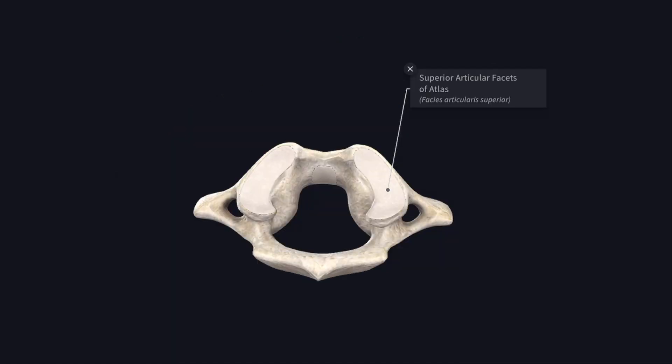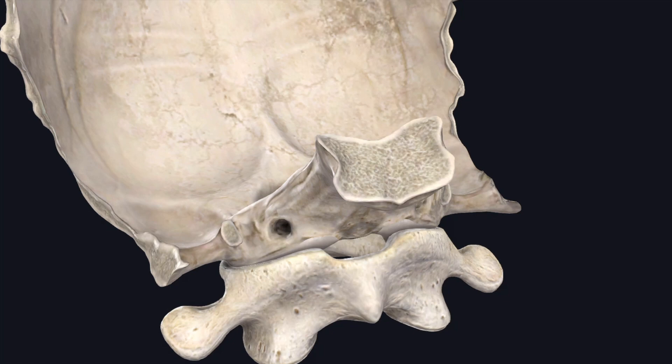The superior articular facet of the atlas is concave, directed upwards and medially, and it is kidney shaped. The articular surfaces of both bones are reciprocally curved. Since the corresponding articular surfaces of two sides are set obliquely from behind, forward and medially, they represent the surface of one ellipsoid and therefore move as one unit.